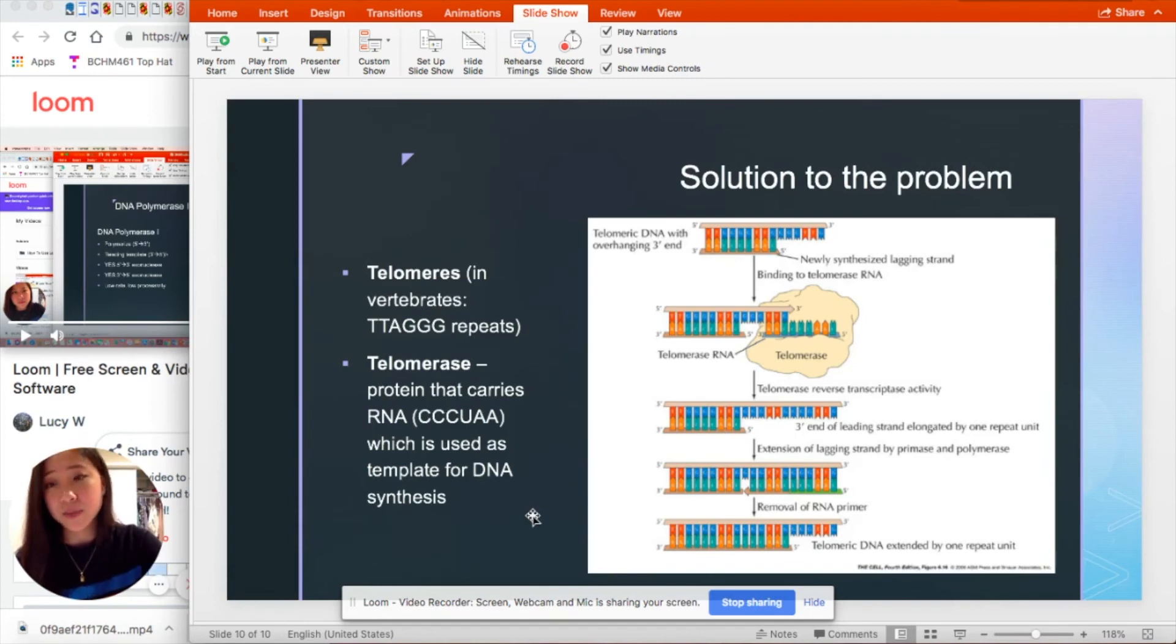So the solution to this problem involves telomeres as well as telomerase. Telomeres in vertebrates would be TTAGGG repeats. And telomerase is a protein that carries RNA, which is used as template for DNA synthesis.